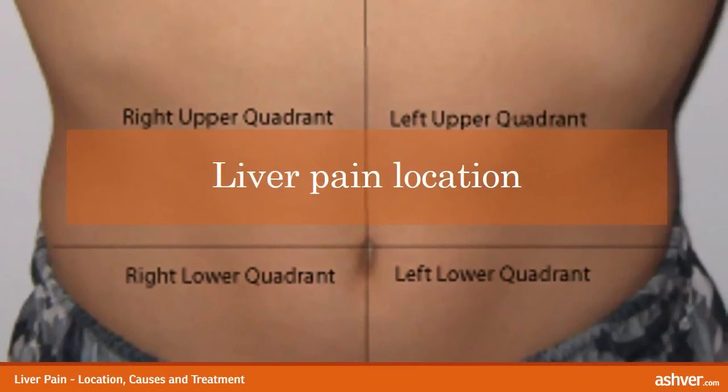Liver pain location: Liver pain, medically known as hepatology, is the pain felt in the upper right quadrant of the abdomen, just beneath the ribcage. The pain is often perceived as vague and dull, but can turn sharp and severe and may occur with backache. Pain in the liver occurs when pressure is exerted on the liver's pain receptors that lie on the capsule covering the organ.